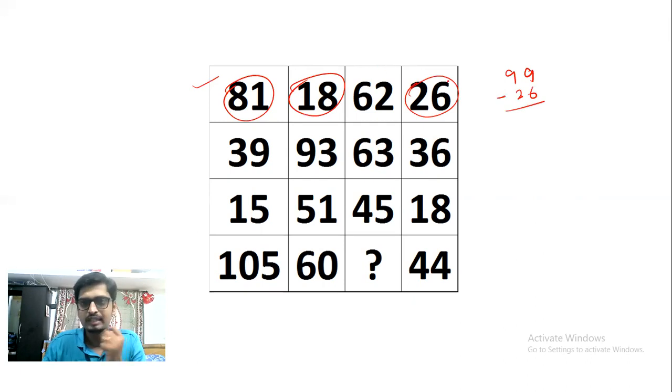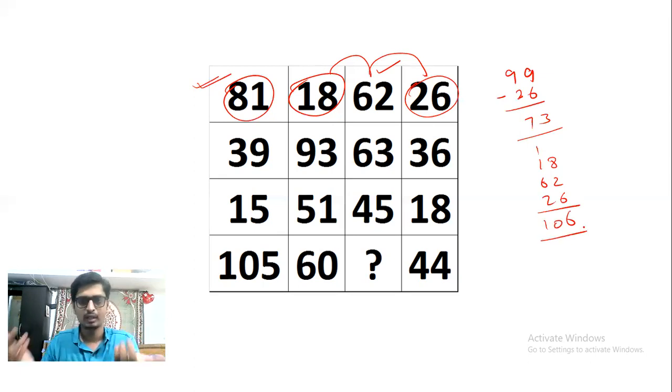Then I will try to swap the numbers. I will try to add 18 plus 62, then 26. Then I will check whether I'm getting 81 or not. So 18 plus 62 plus 26, I get 106. So it is not working. Then I will go for column. I will look column-wise.